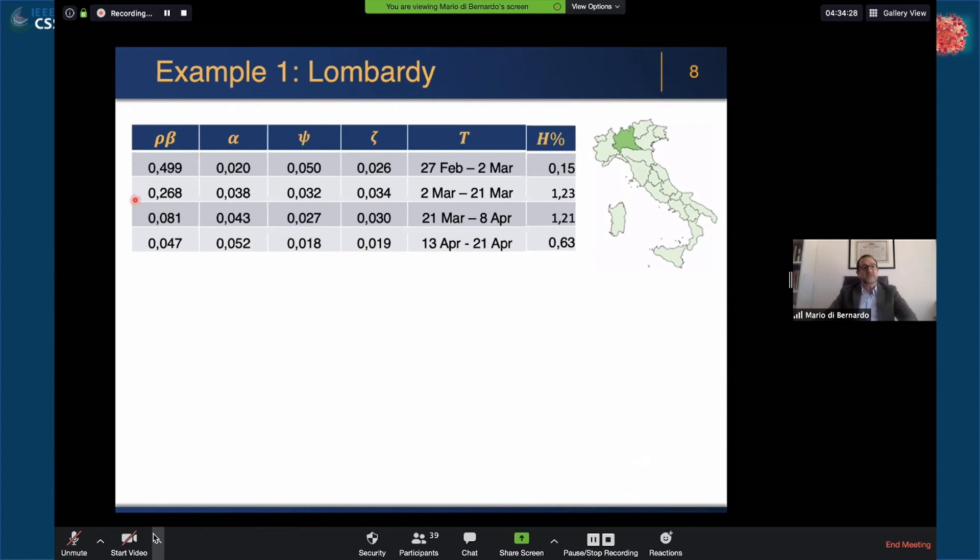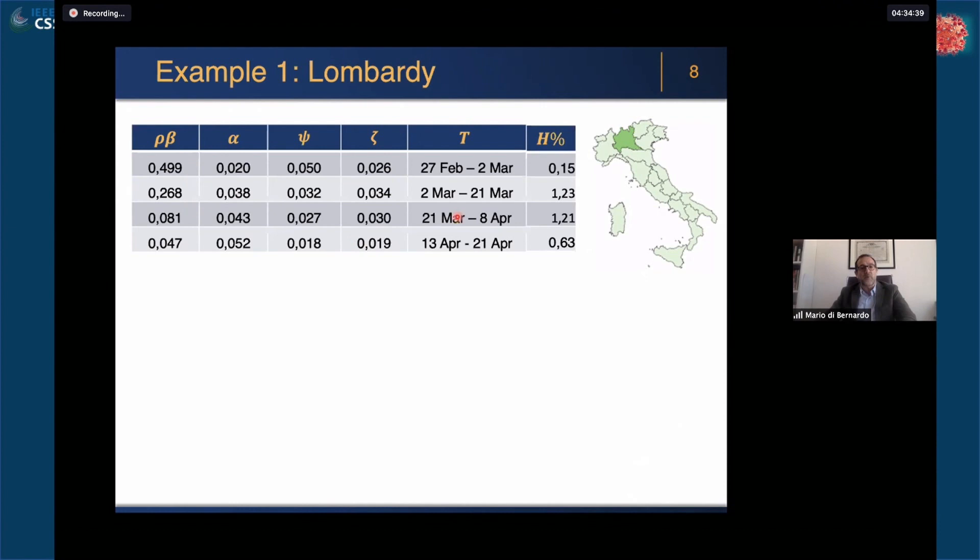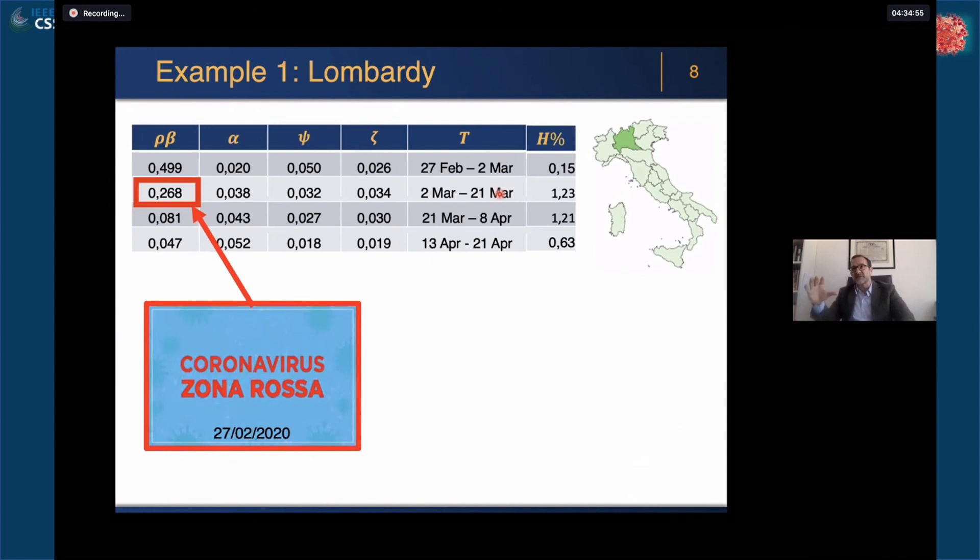Here you see our estimated parameters. In particular I want you to focus on this which is the effect of the social distancing and on this column which is the mortality rate. If we look at this data and the breakpoints, here are the time windows that were detected automatically from our identification algorithm. We see a notable change from the first window to the second, and this corresponds to when there was the first lockdown in Lombardy of the initial outbreak.